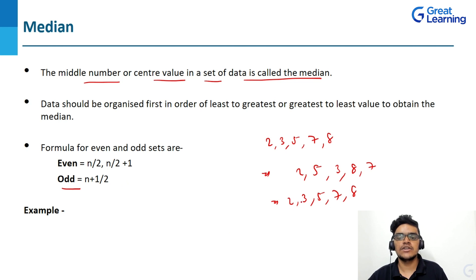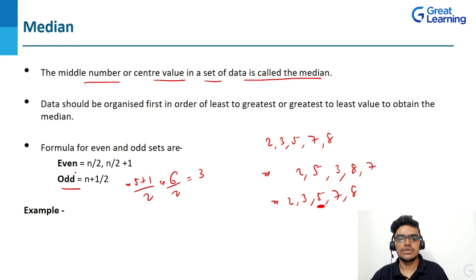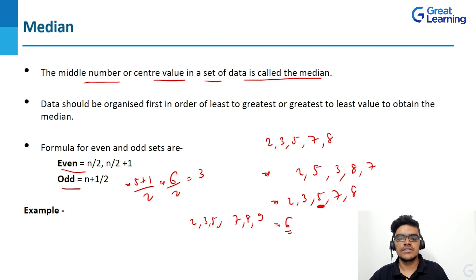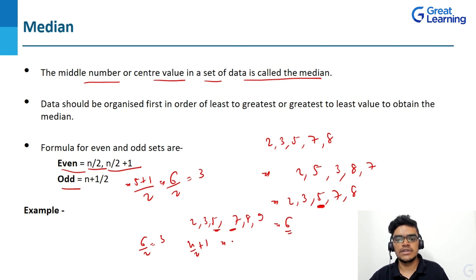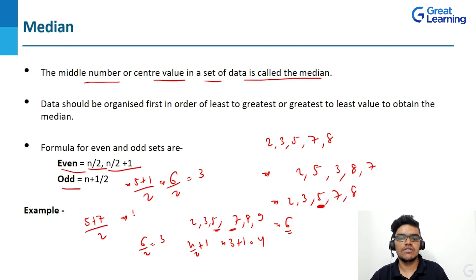For even numbers, take the example 2, 3, 5, 7, 8, 9, which has 6 values. For even count, median is the average of the (n/2)th and (n/2 + 1)th values. Here n/2 = 3 and n/2+1 = 4, so we average the 3rd and 4th values: (5+7)/2 = 12/2 = 6. The data should first be organized in ascending or descending order to obtain the median.